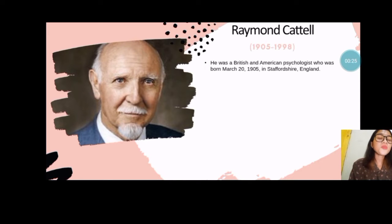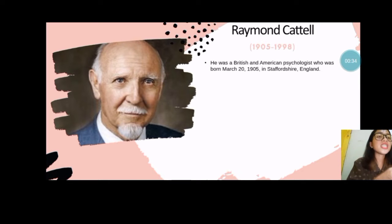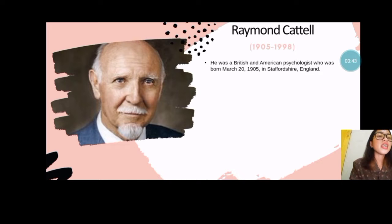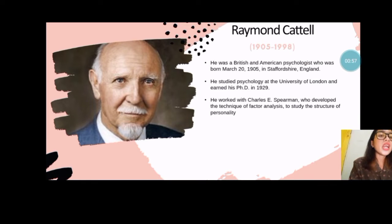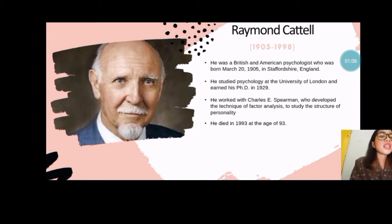So at first, let's look at the life background of Cattell. We won't go into too much detail because we'll focus more on the approach he developed. He was a British and American psychologist who was born on March 20, 1905 in Staffordshire, England. He studied psychology at the University of London and earned his Ph.D. in 1929. He worked with Charles E. Spearman who developed the technique of factor analysis to study the structure of personality. He died in 1993 at the age of 93.